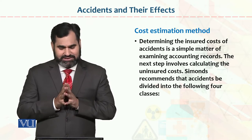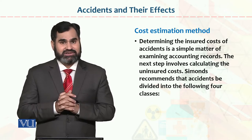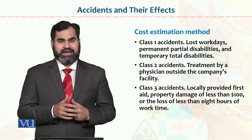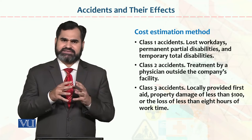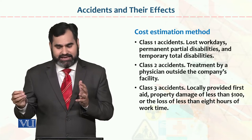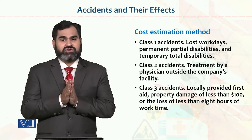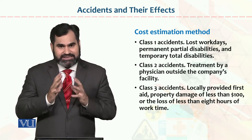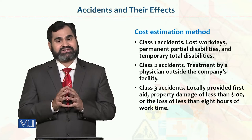The next step involves calculating the uninsured cost. Simons recommends that accidents be divided into four classes, which we will discuss one by one. All four classes are related to accidents. Class one accident relates to lost work days. When an accident occurs, the employee may not be able to work the complete day due to mental disturbance. Due to mental disturbance, they cannot perform their work, so lost work days will exist.